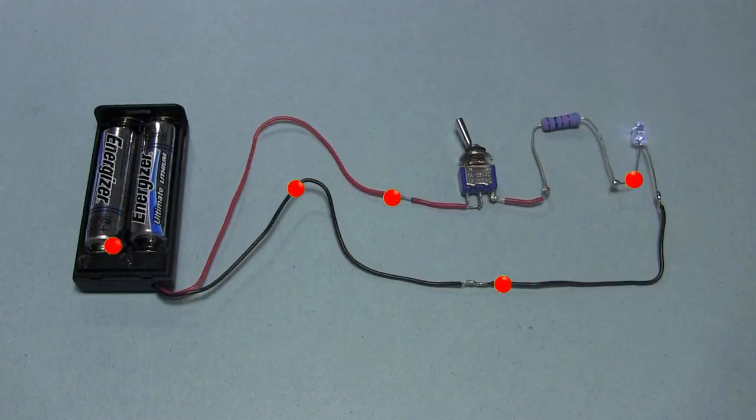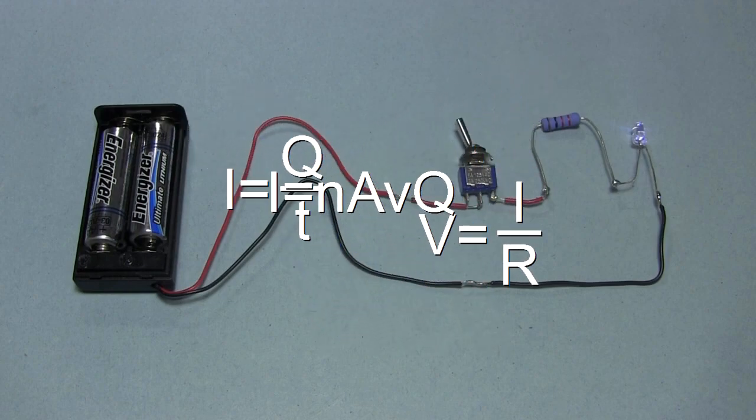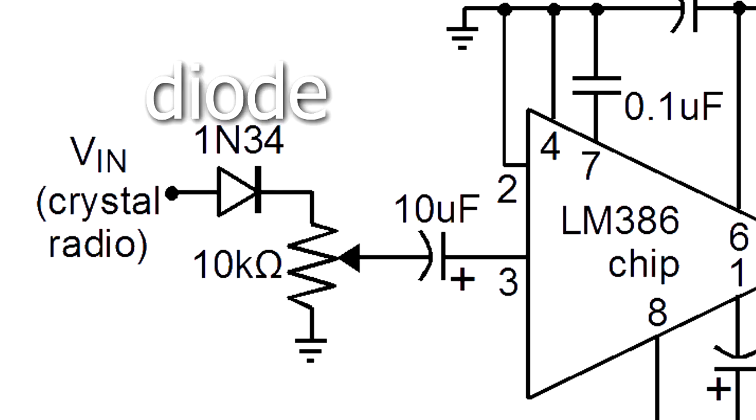But over those 150 years, the flow of positive charge in a wire became the convention, and engineers still use it today. The formulas still work, so in a sense it doesn't matter. It just causes a little confusion for many when you see a symbol like a diode like this, that has an arrow pointing this way, and yet the electrons move this way.